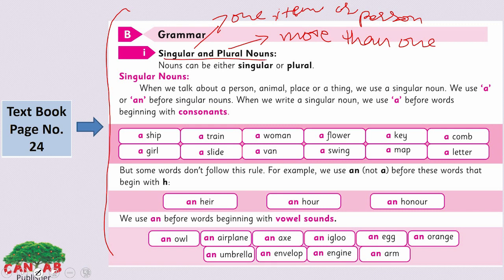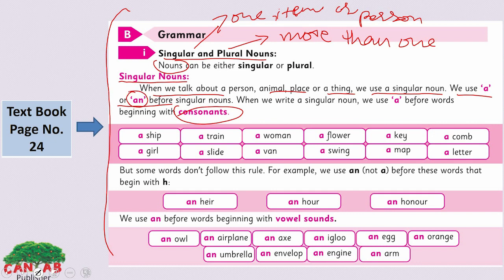Here, look at singular and plural nouns. Nouns can be either singular or plural. You know the noun — noun names a person, place or thing. When we talk about a person, animal, place or thing, we use a singular noun. We use 'a' or 'an' before a singular noun. We use 'a' before words beginning with the consonant sound. I hope you are familiar with the consonant sound and vowel sound. We add 'an' before the vowel sound.